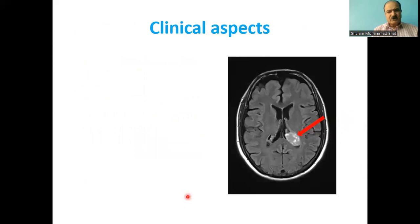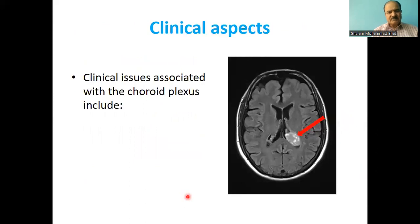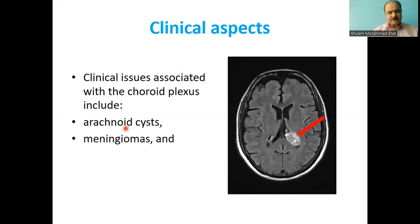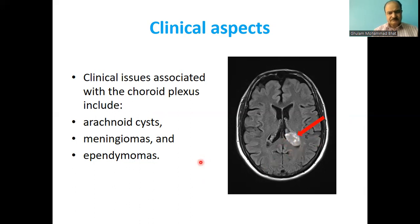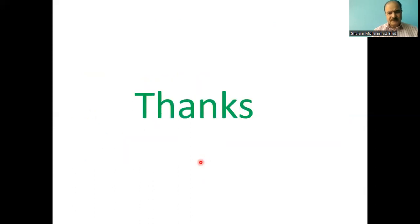Clinical aspects of the choroid plexus: sometimes clinical issues can be associated with the choroid plexus, such as arachnoid cysts, meningiomas, and ependymomas. As seen in this MRI picture, an ependymoma is present here.